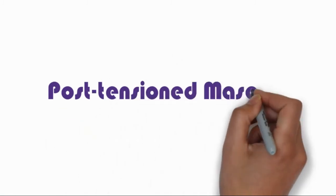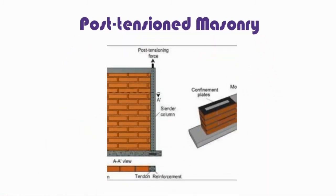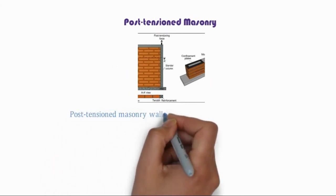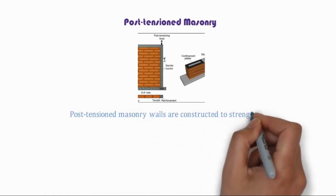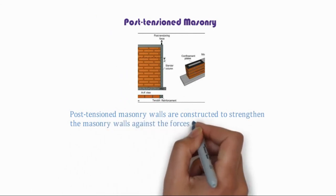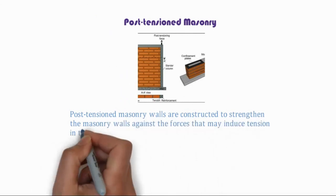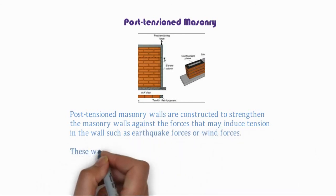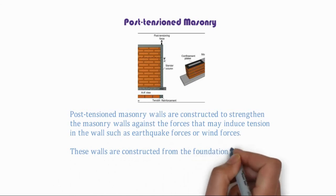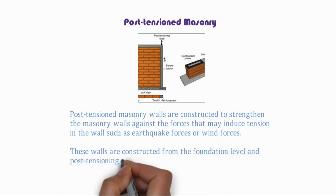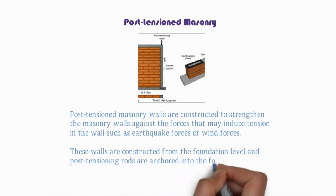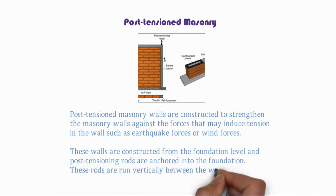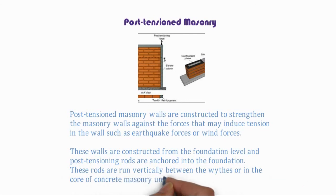Post-tensioned masonry walls are constructed to strengthen masonry walls against forces that may induce tension in the wall, such as earthquake forces or wind forces. These walls are constructed from the foundation level, and post-tensioning rods are anchored into the foundation. These rods are run vertically between the widths or in the core of concrete masonry units.